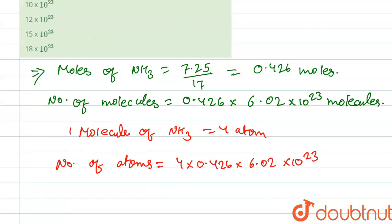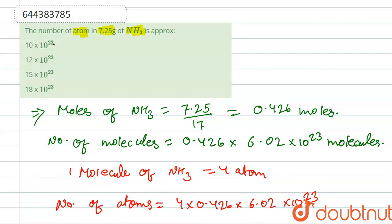So this total is 10 times 10 to the power 23 atoms. So our correct option is option first.